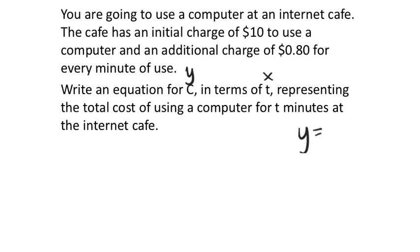So when we write the equation Y equals MX plus B, just filling in the blanks, I now know what Y and X represent. Y is C, the cost, the total cost of using a computer for T minutes at the internet cafe. It's all right there in the problem.